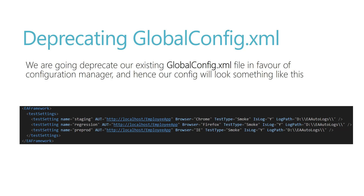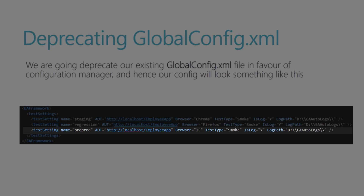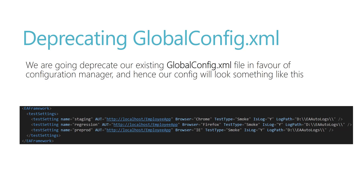This is a really nice feature of this custom config. If you are running the EA Framework in production, staging, or a pre-prod environment, you can name different settings with different browsers and different URLs for different environments. For instance, for pre-prod you can see the test setting name is pre-prod, the browser is IE, and the test type is SMOKE. These are exactly the same attributes from the globalconfig.xml file, but they reside in the app.config file — so you don't need to worry about relative paths. .NET takes care of it automatically, even with Azure, Jenkins, and CI environments like TFS.